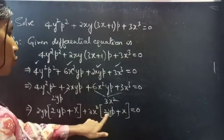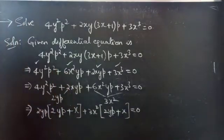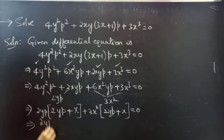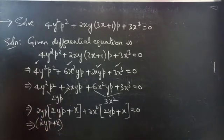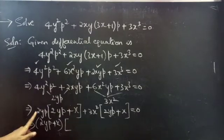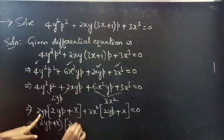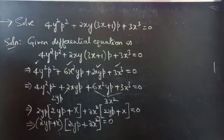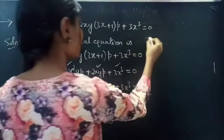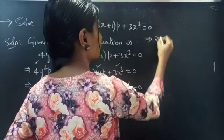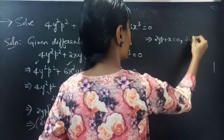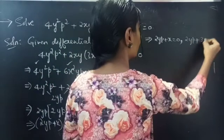We get 3x squared(2xp + x). In both terms, you have (2yp + x) common. So, take it out: (2yp + x)(2yp + 3x squared) equals 0. Therefore, 2yp + x = 0 and 2yp + 3x squared = 0.